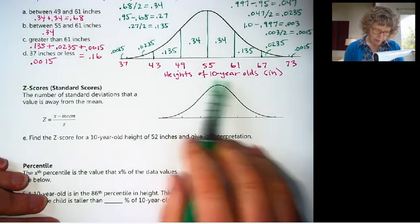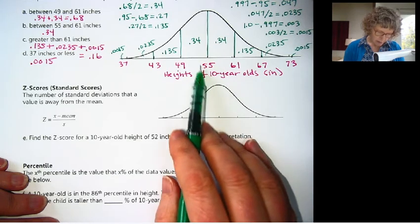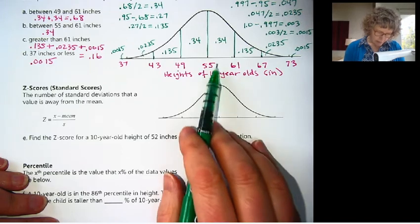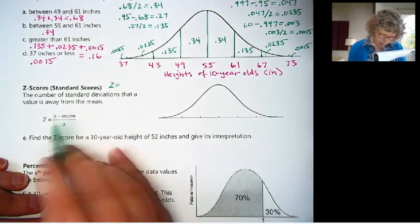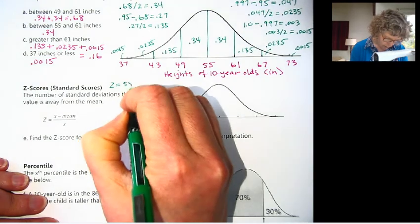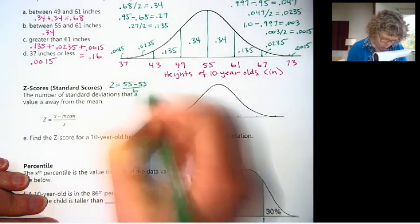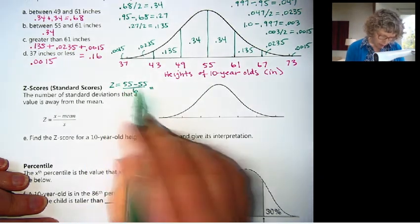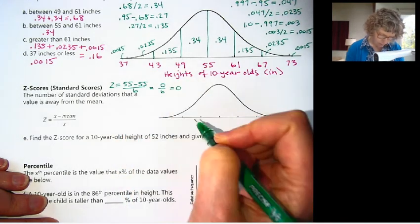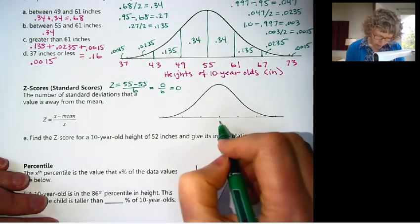Okay, what does that all mean? Let's use our height of 10-year-old example, and I'm going to calculate a few z-scores so you can see what's going on here. Let's start with this middle. Let's just say the mean height, we know the mean height is 55, let's find the z-score for this value. So I'm going to go up here.